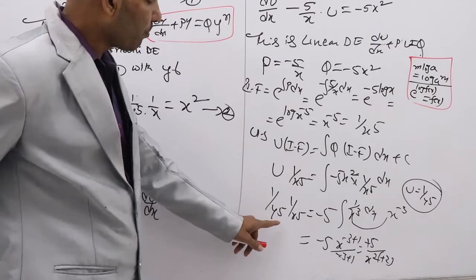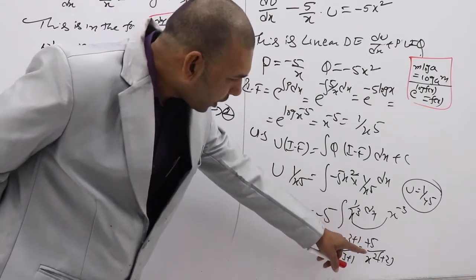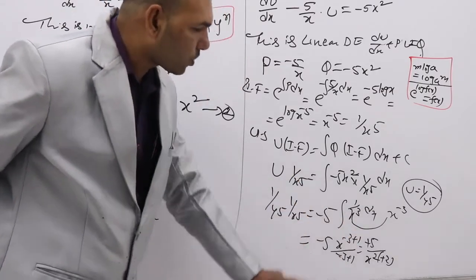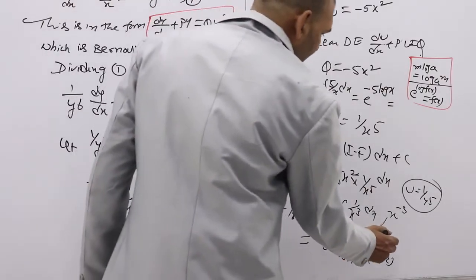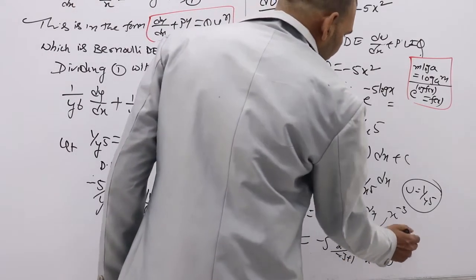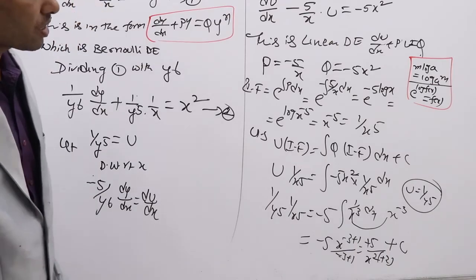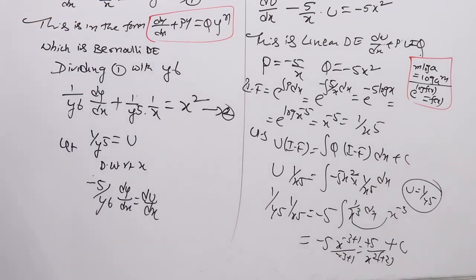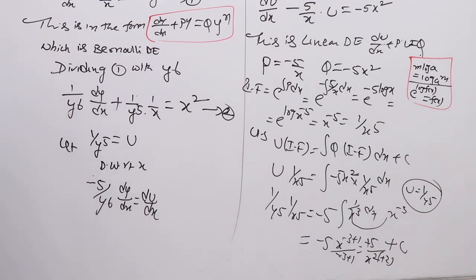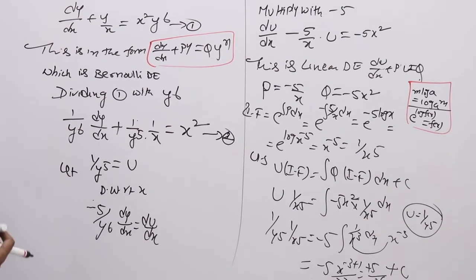Therefore, 1/(y⁵ · x⁵) equal to 5/(2x²) plus C. After integration, you need to add an arbitrary constant C for indefinite integration. This is how one can easily solve a Bernoulli differential equation by dividing and using the substitution.